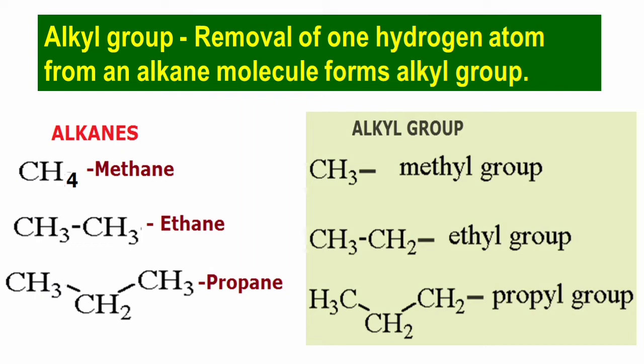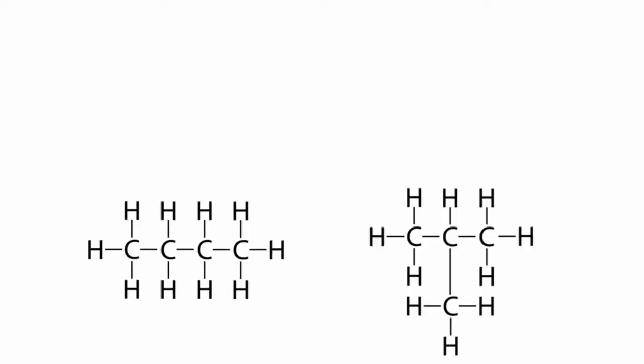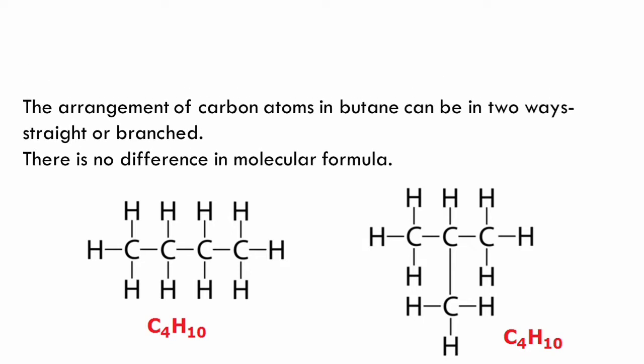Now observe these two compounds whose structural formulas are given. What similarity do you observe? Look at the number of carbon and hydrogen atoms — both compounds have four carbon atoms and ten hydrogen atoms, so the molecular formula of both is C4H10. But they are two different compounds. C4H10 is butane, and the arrangement of carbon atoms in butane can be in two ways: either in a straight chain or in a branched chain.